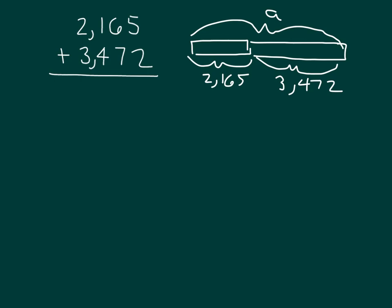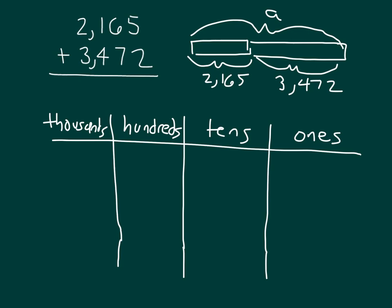We'll use a place value chart to help us find the sum. I've drawn that place value chart, and now we'll go ahead and model each of those numbers. First, we'll model the number 2,165.